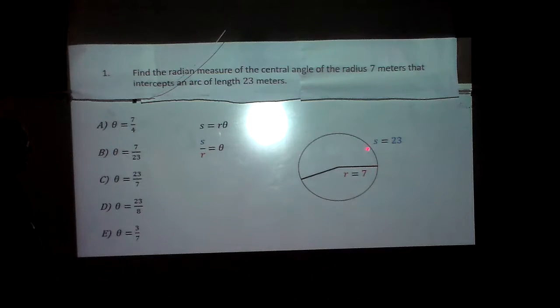Like right here, the radius is 7. So how many times does 7 appear in there? It's just 23 over 7. That's all we have to do.